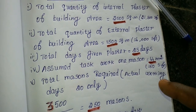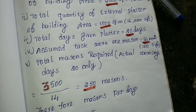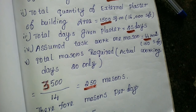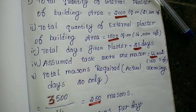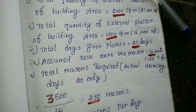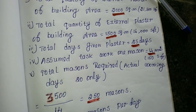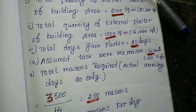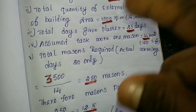Total mason requirement. Actual working days: 20 only. That's why 20 days. We have 1,500 square meters. We can calculate for 25 days or 20 days — we calculate based on 25 days and 1,500 square meters.